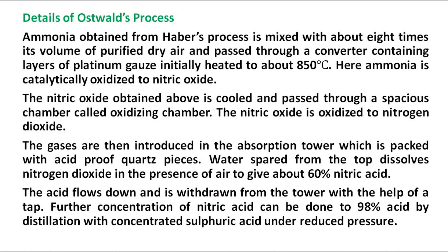Details of Ostwald's Process: Ammonia obtained from Haber's Process is mixed with about 8 times its volume of purified dry air and passed through a converter containing layers of platinum gauze, initially heated to about 850 degrees Celsius. Here, ammonia is catalytically oxidized to nitric oxide.